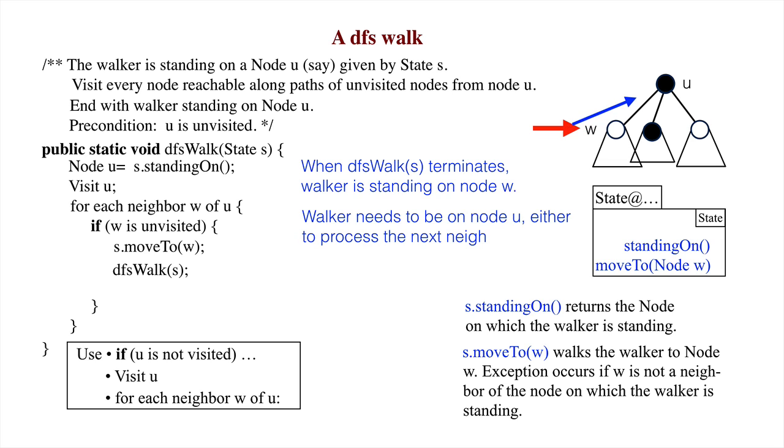But the walker needs to be on node u, either to process the next neighbor or because the method is done. Therefore, we insert the move to u. That completes the development.